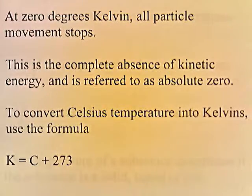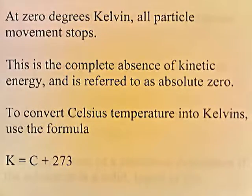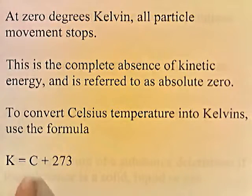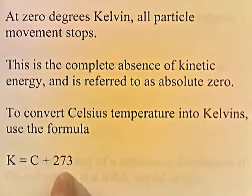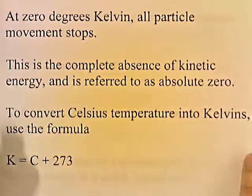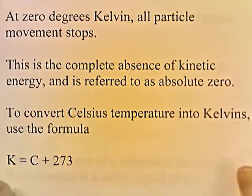At zero degrees Kelvin, all particle movement stops — this is the complete absence of kinetic energy and is referred to as absolute zero. To convert a Celsius temperature into Kelvin, we use this formula: if it's 20 degrees Celsius, you add 273 to get 293 Kelvin. We'll do more of this later, but for now this is just to get you familiar with the idea that there are two different scientific ways of measuring temperature.